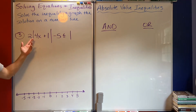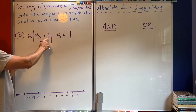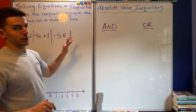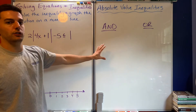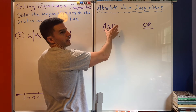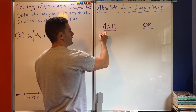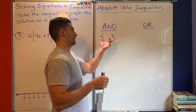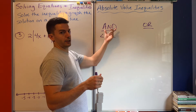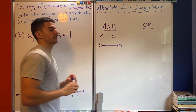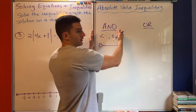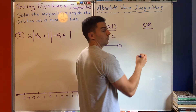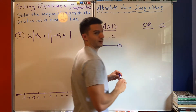So I've got number three: two times the absolute value of 4x plus 1, minus 5, is less than or equal to 1. Before we jump in, just to review: 'and' solutions are less than or less than or equal to inequalities when you go to split the inequality — that is the 'and' scenario, and on the number line it looks like a single span of overlapping numbers.